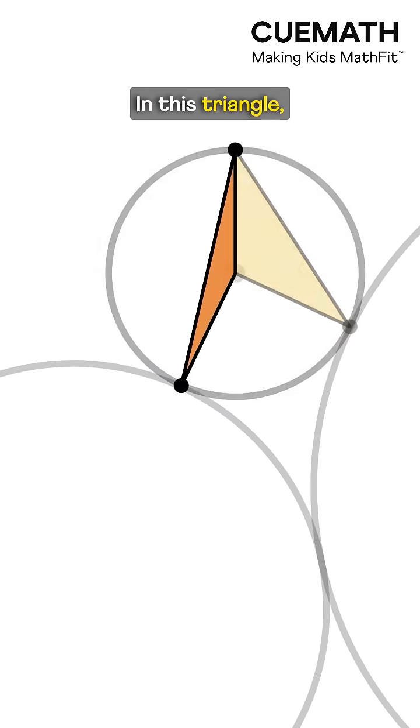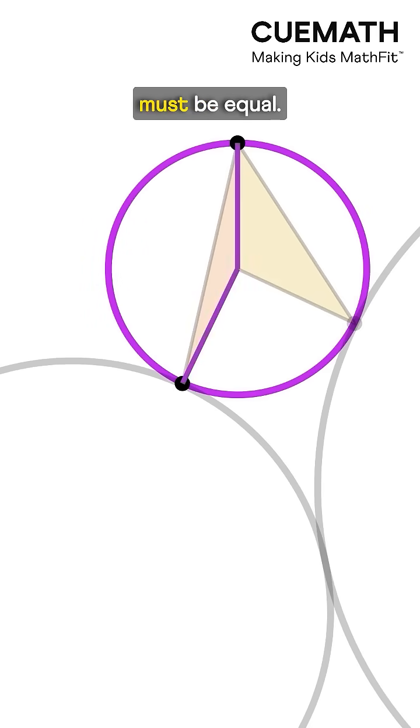We get two triangles. In this triangle, these two sides are the radii, so they must be equal.